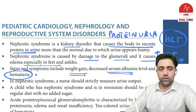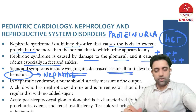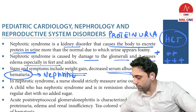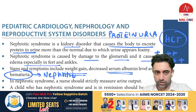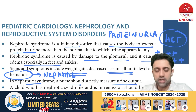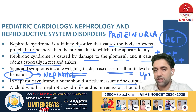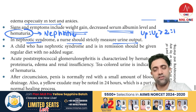In nephrotic syndrome, the patient will have massive proteinuria, hyperlipidemia, edema, weight gain, and hypoalbuminemia. Importantly, hematuria is more commonly seen in nephritic syndrome, not nephrotic syndrome — that is how you differentiate the two. The nursing intervention focuses on measuring urine output. The urinary protein to urinary creatinine ratio of more than 2:1 is significant in nephrotic syndrome.